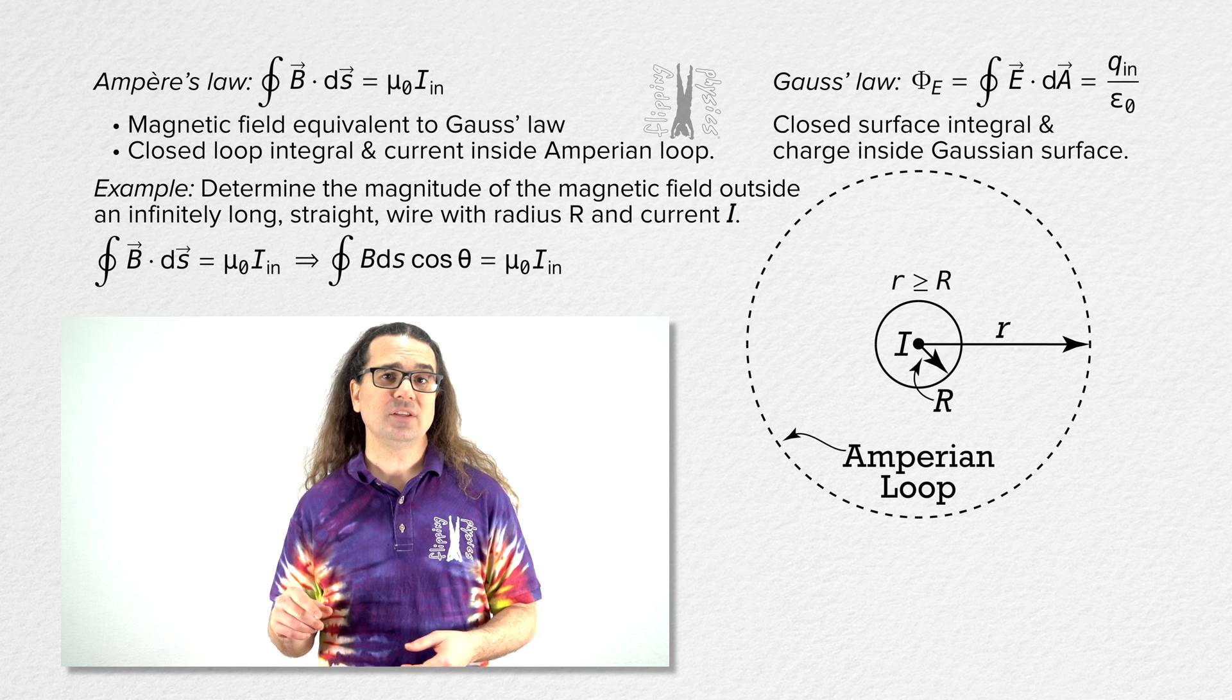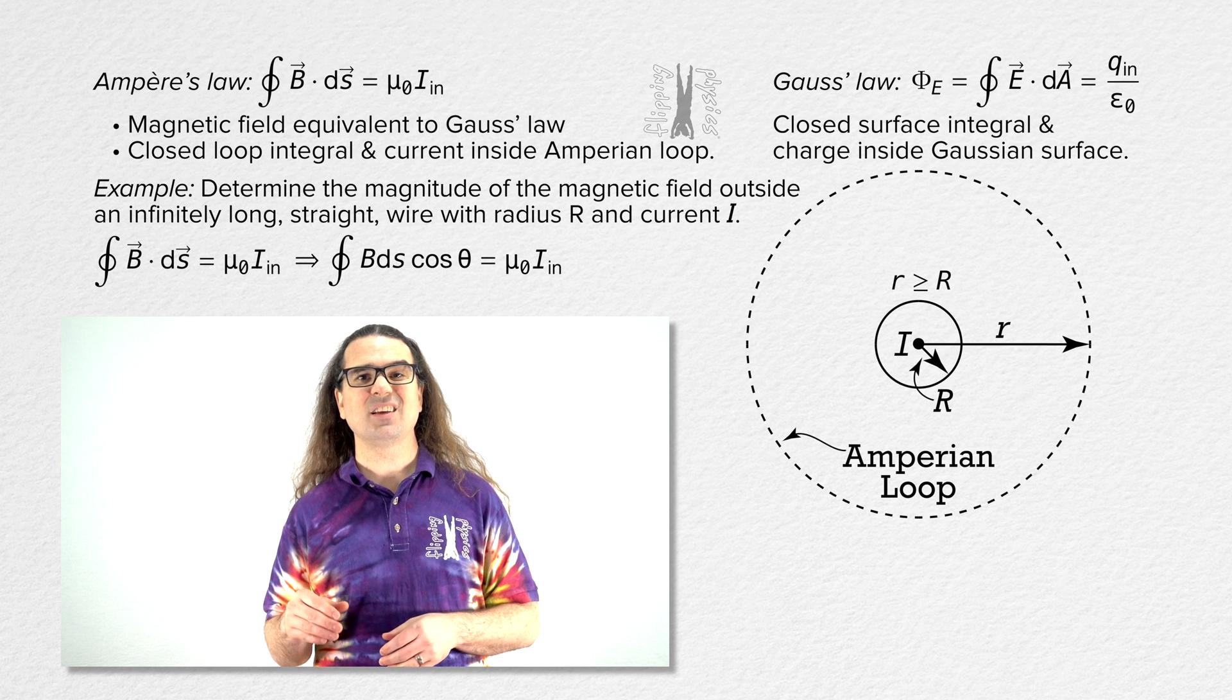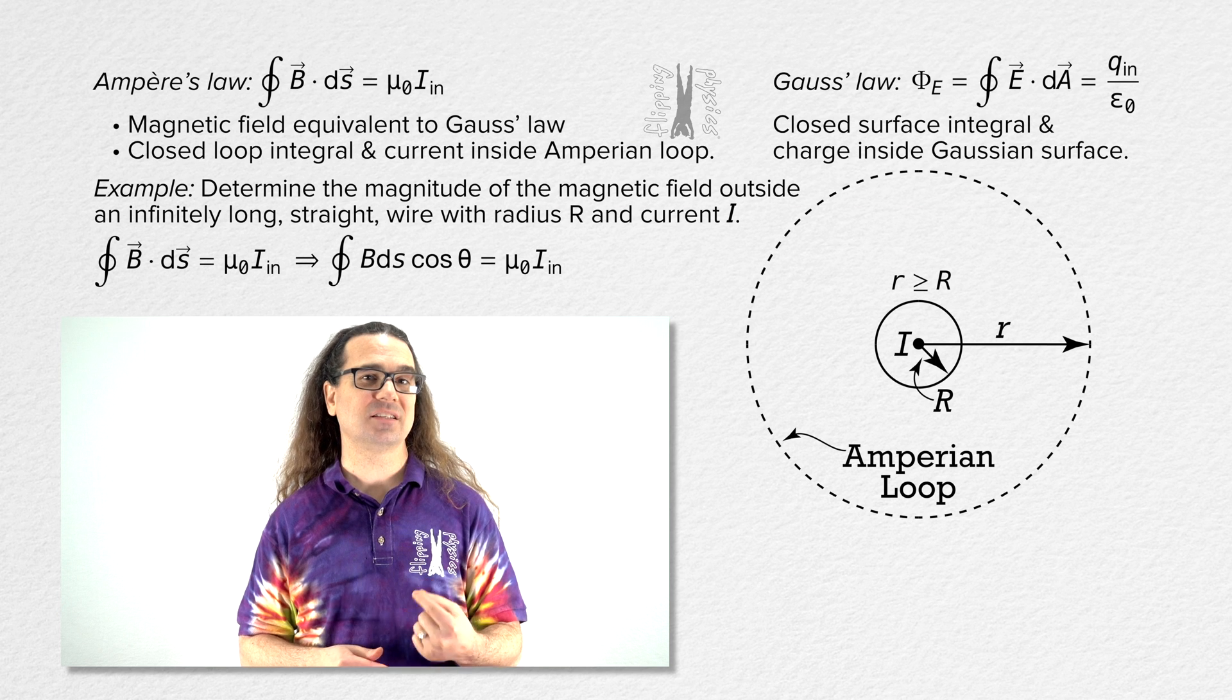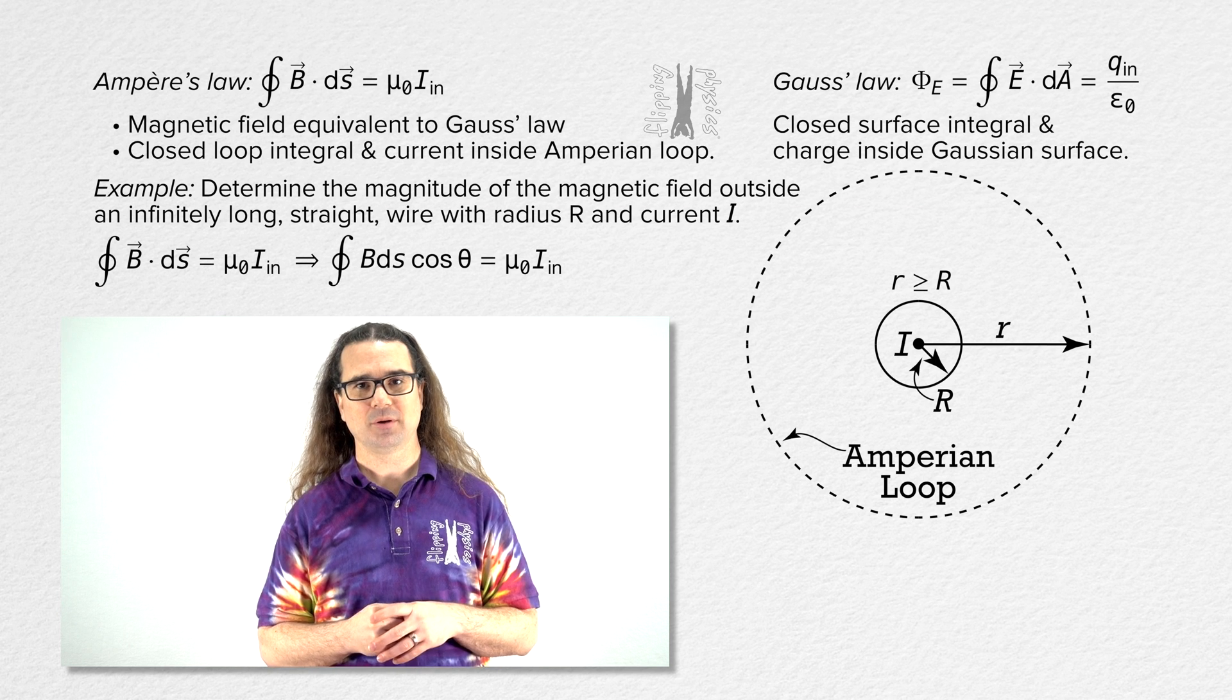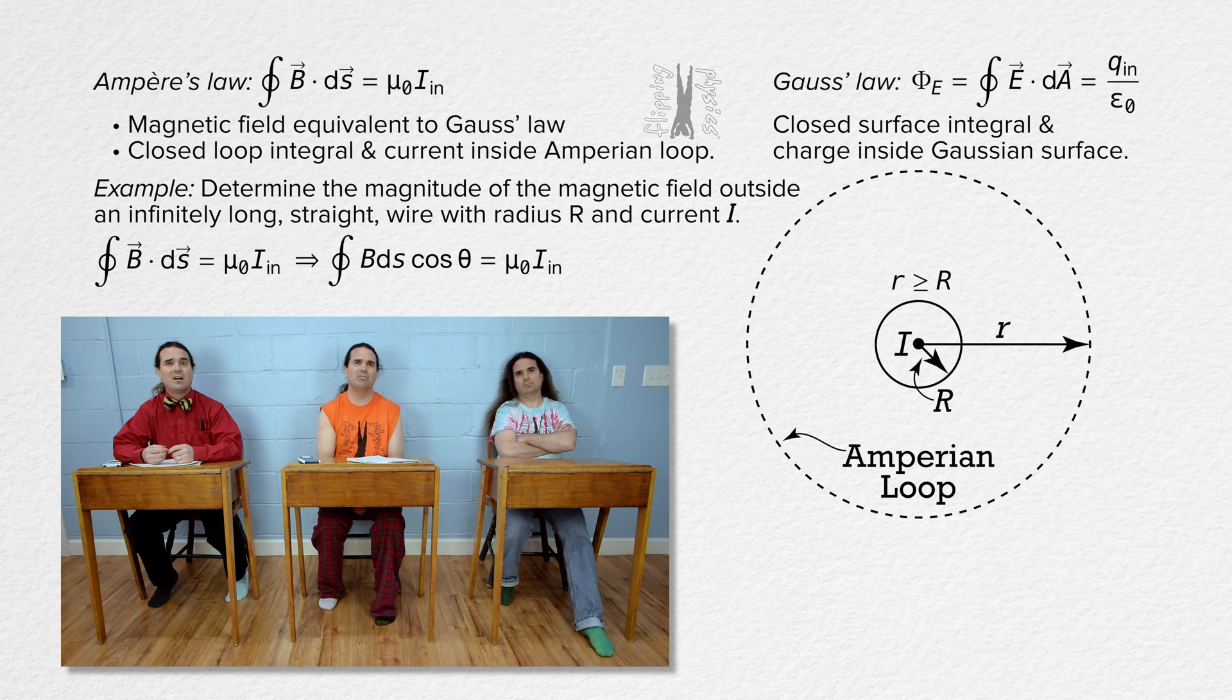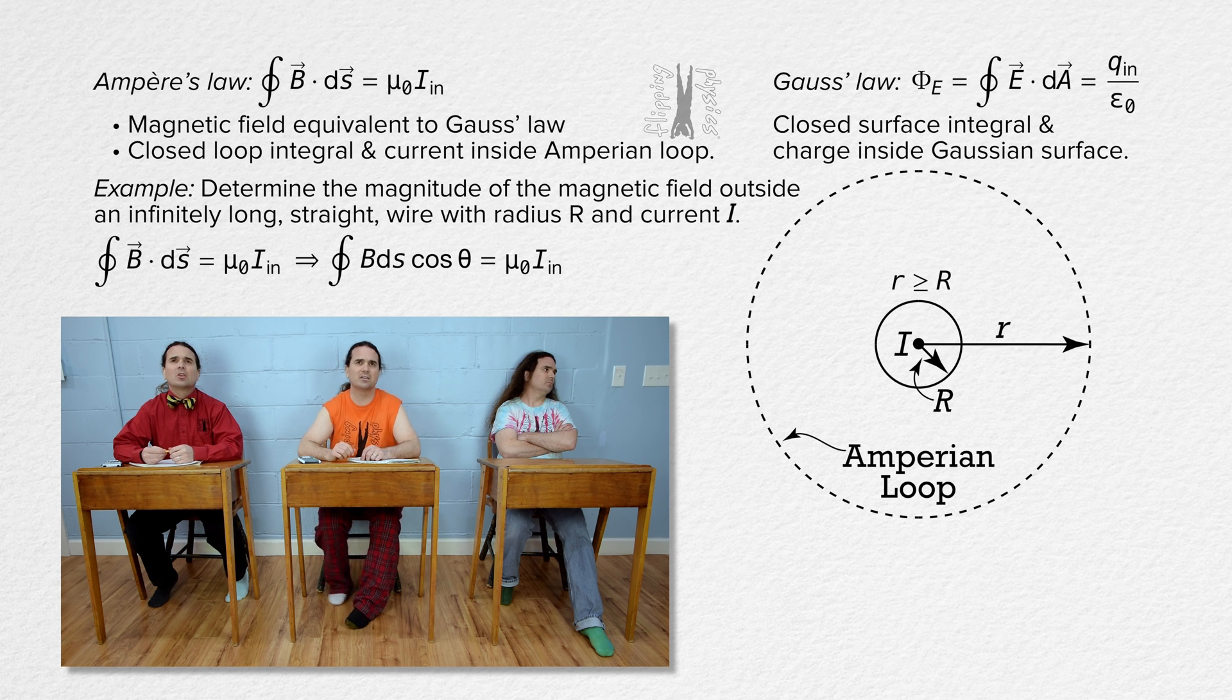Now we do need to determine the angle theta. In order to do that, we need the directions of the magnetic field at the location of the Ampereian loop and the direction of ds, an infinitesimally small displacement along the Ampereian loop. Let's start with the direction of the magnetic field. Bobby, please. The direction of the magnetic field on the Ampereian loop which is caused by the current carrying wire.